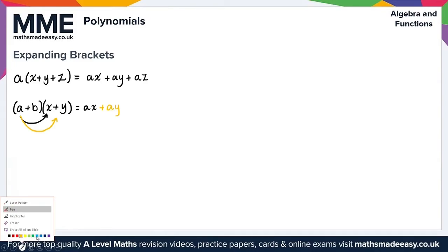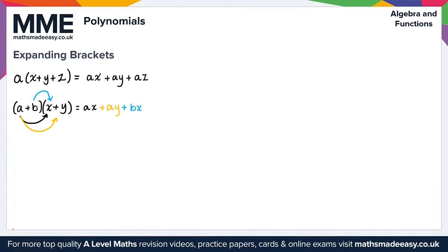Moving on to the I in FOIL, that means we multiply the inside terms — the two closest — so that's b times x, giving us plus bx. And finally the L in FOIL tells us we multiply the last two terms, so b times y gives us plus by. That's what we get in the case of double brackets.